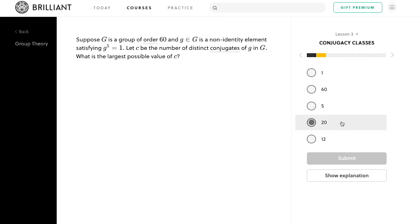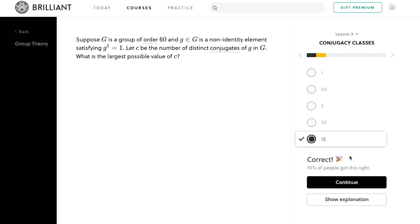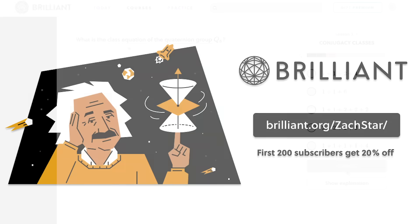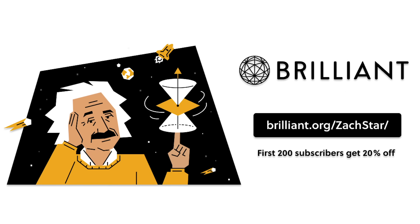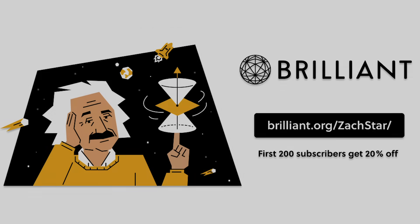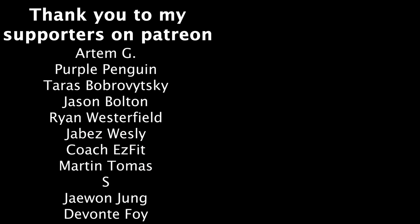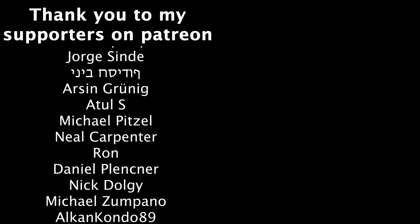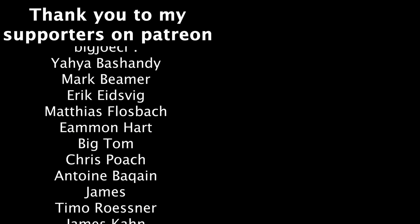So if you want to get started right now and support the channel, then go to brilliant.org slash Zach Star or click the link below. And the first 200 people to sign up will get 20% off their annual premium subscription. And with that, I'm going to end that video there. Thanks as always to my supporters on Patreon. Social media links to follow me are down below. And I'll see you guys in the next video.